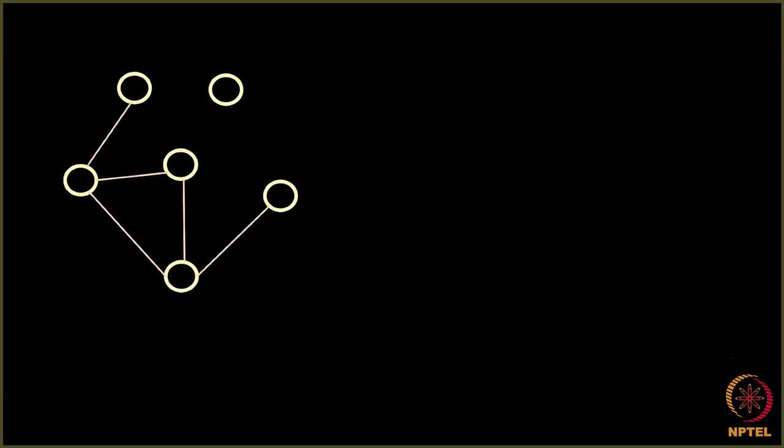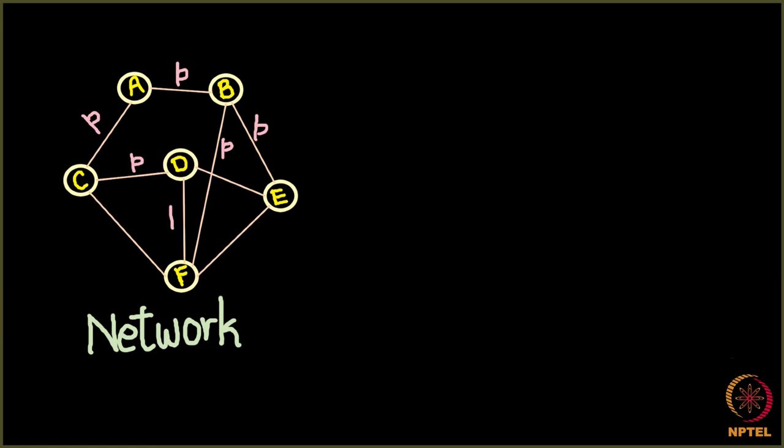Let's say that we have a complicated network, not a tree. By complicated what I mean is not a tree which looks something like this. I have some nodes A, B, C, D, E, F here and every edge has a probability P of transmitting the infection as before.